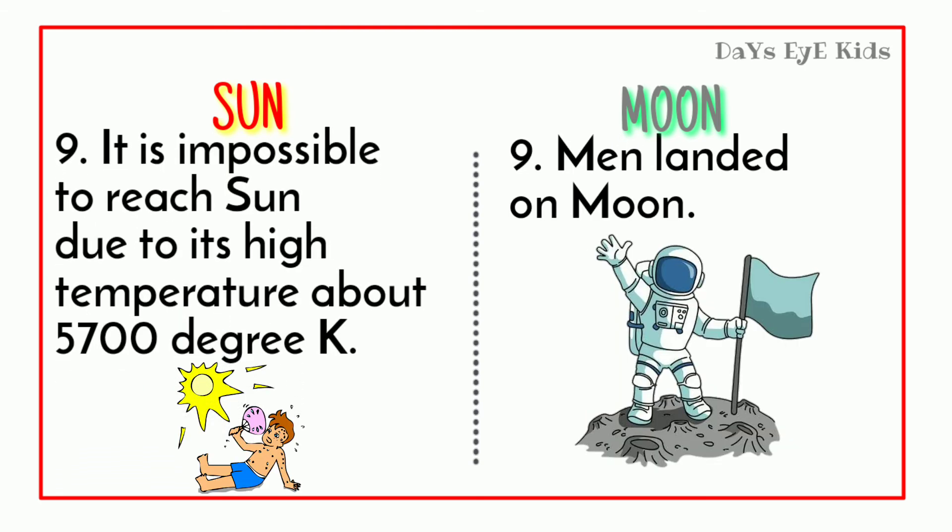It is impossible to reach the Sun due to its high temperature of about 5700 degrees Kelvin. Men have landed on the Moon.